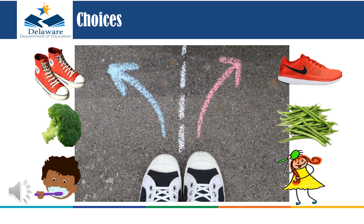Recent research has suggested that allowing choices to your child can help provide them with feelings of empowerment and determination. Consider allowing your child structured choices throughout their day. These can include structured choices regarding clothing, food, or order of routine — for example, which shoes to wear, whether to eat broccoli or green beans, or whether to brush their hair or teeth first in the morning.